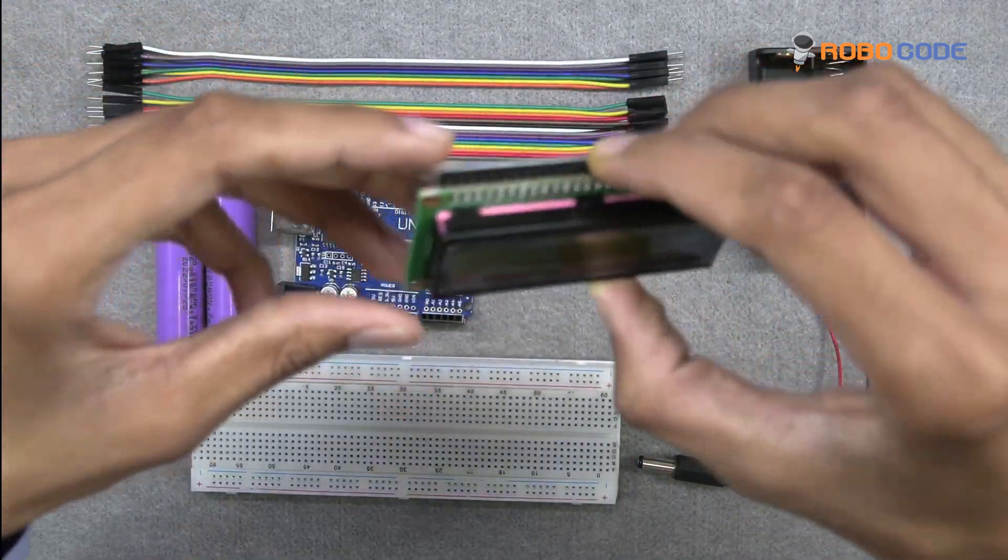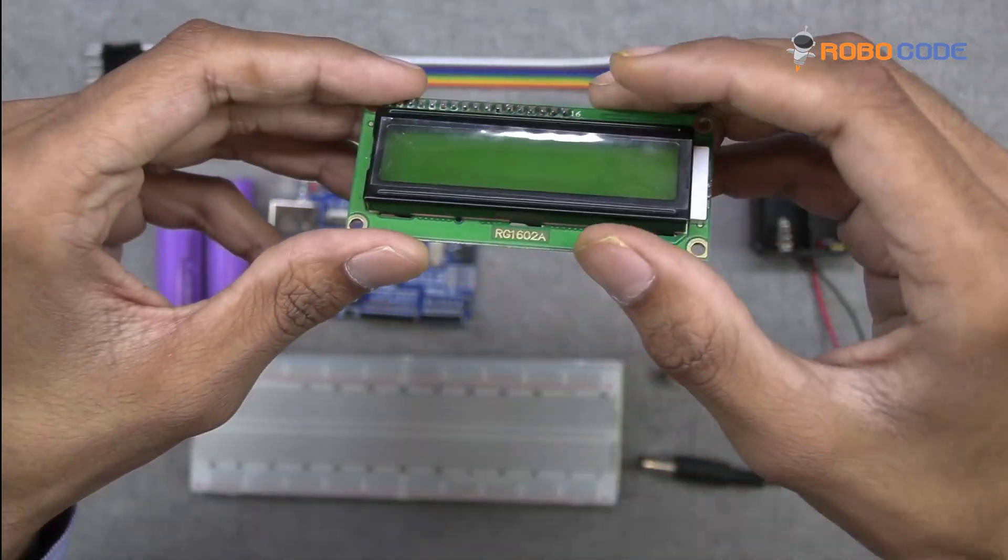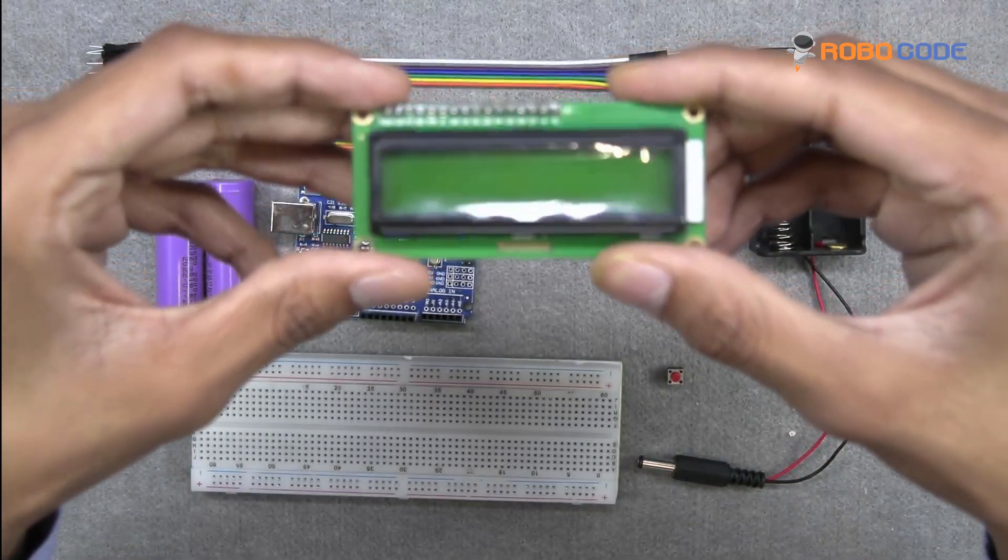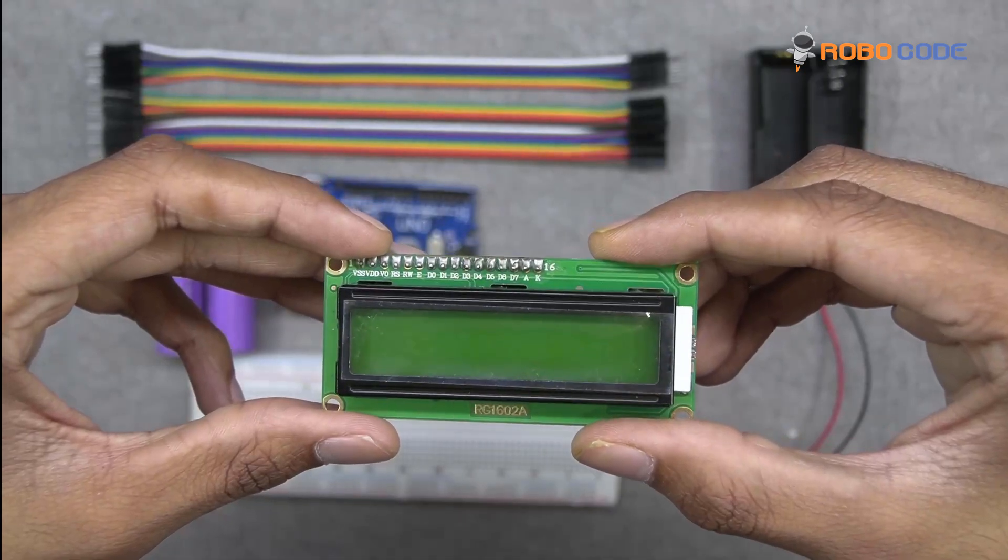We will take a 16x2 LCD display and one I2C display converter and we'll connect both the circuits as you can see in this video.